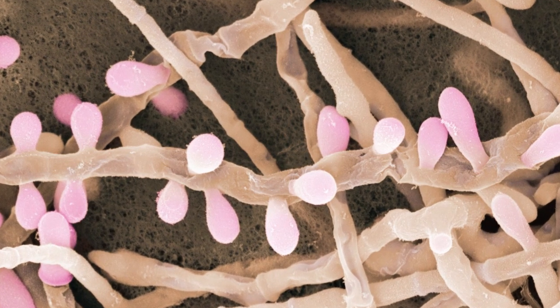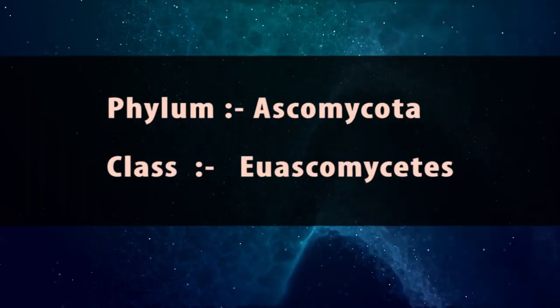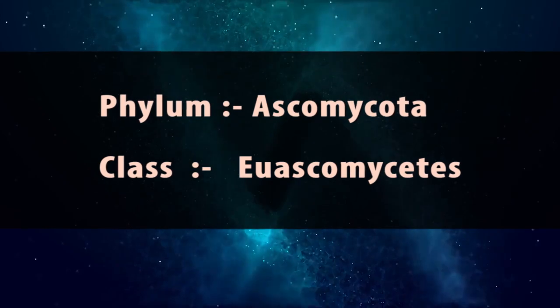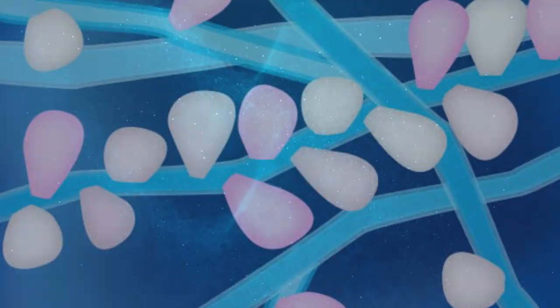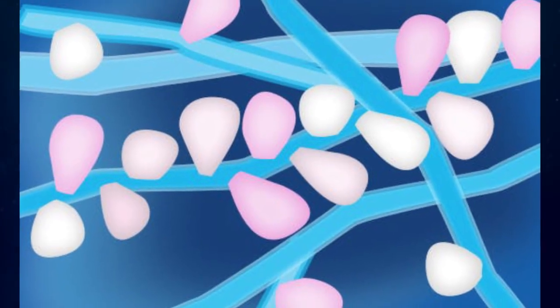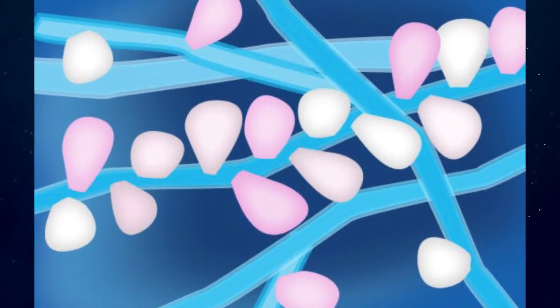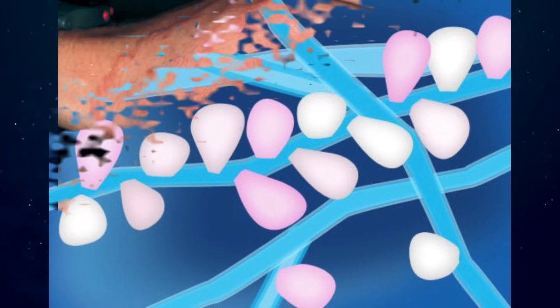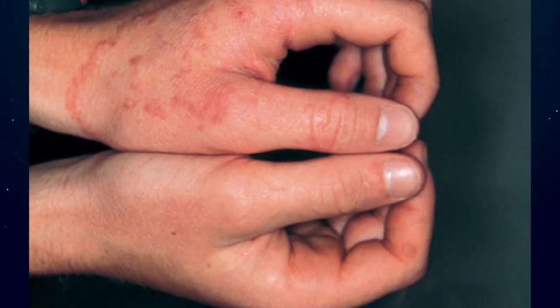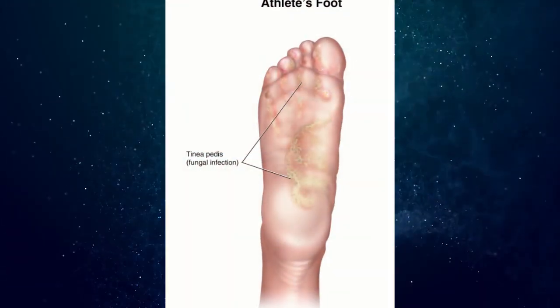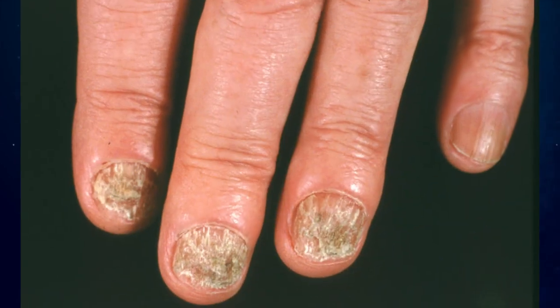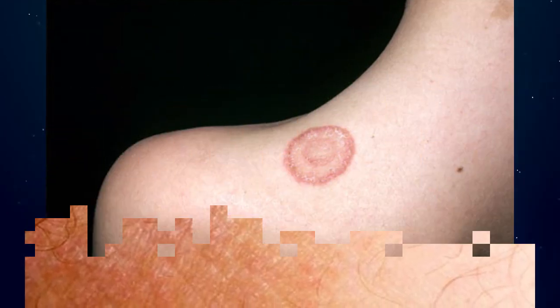Trichophyton rubrum is a dermatophytic fungus in the phylum Ascomycota, class Ascomycetes. It is an exclusively clonal, anthropophilic saprotroph that colonizes the upper layers of dead skin, and is the most common cause of athlete's foot, fungal infection of nail, jock itch, and ringworm worldwide.